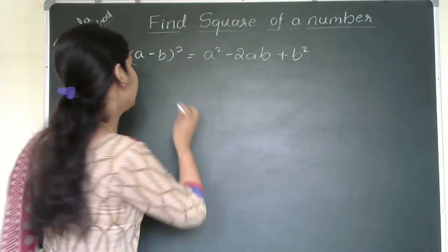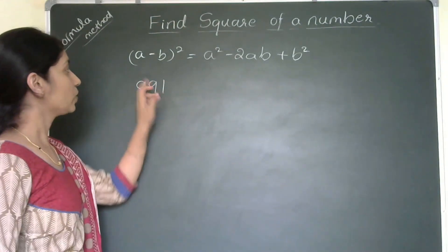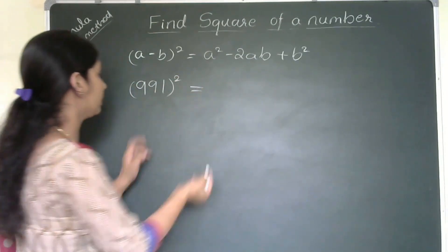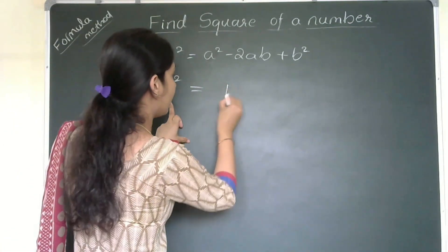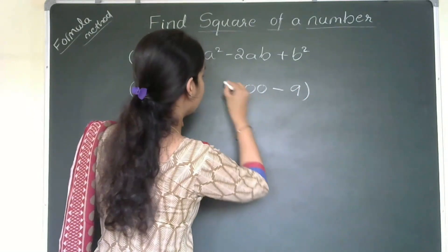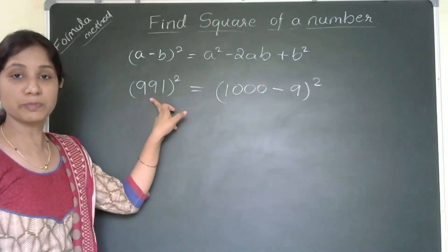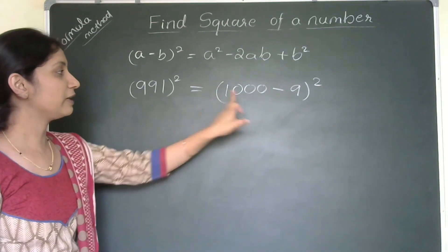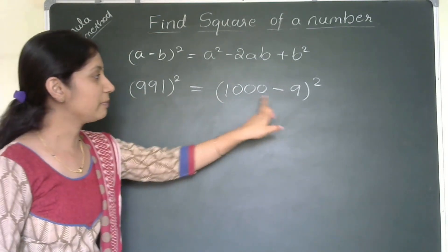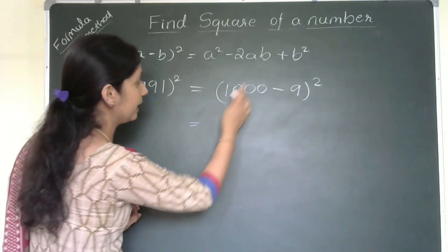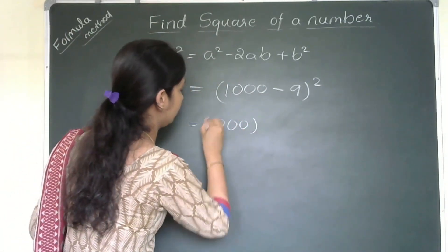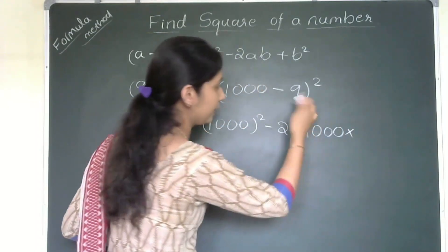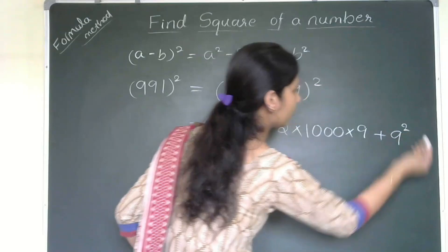Let us consider one more example: 991, a 3-digit number. We rewrite 991 as (1000 − 9)², because the nearest multiple of 10 is 1000 and the difference is 9. Now expanding using the formula: a² = 1000², minus 2 × 1000 × 9, plus 9².